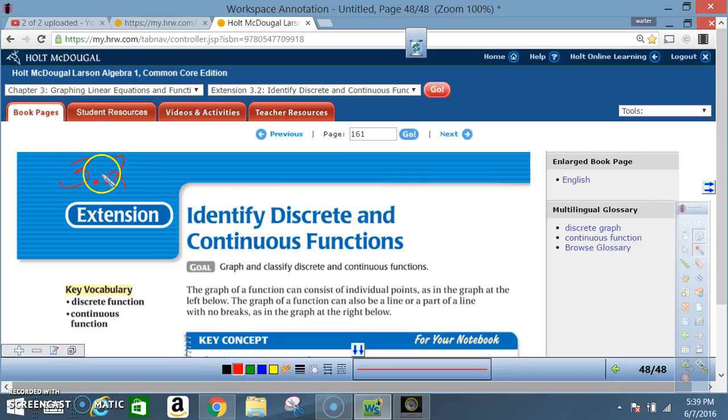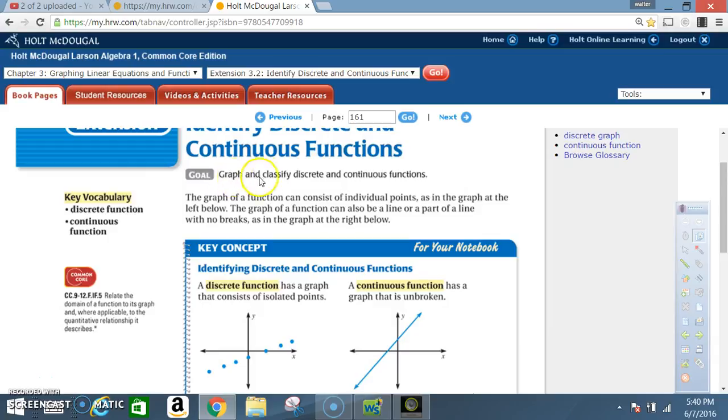Okay class, today we're in section 3.2 extension: identify discrete and continuous functions. Key vocabulary: discrete function, continuous function. Goal: graph and classify discrete and continuous functions. The graph of a function can